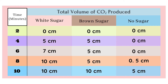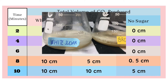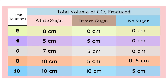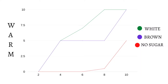At 8 minutes, the yeast in white and brown sugar glasses rose with new measurements: white sugar has 10 cm, while brown sugar has 5 cm, and no sugar rose to 0.5 cm. After 10 minutes, white sugar holds at 10 cm, brown sugar rises to 10 cm, and no sugar has 5 cm. The line graph shows that white and brown sugar reached the same measurement after 10 minutes, while no sugar rose after the 10-minute mark.